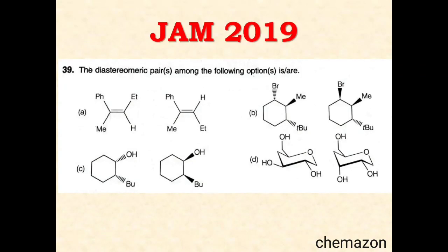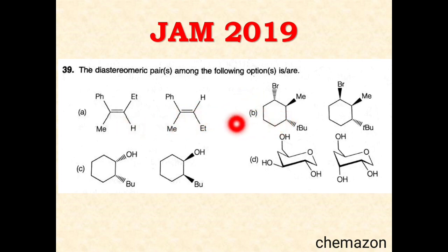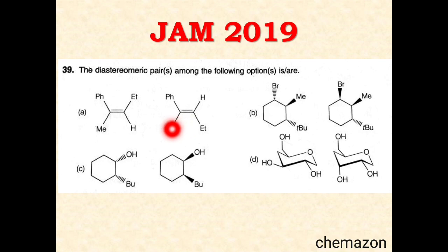The first question is from the JAM 2019 paper: 'The diastereomeric pair among the following is or are.' In the JAM exam there is a section called MSQ — Multiple Select Question. In each option two molecules are given and you have to find out which pair is a diastereomer.